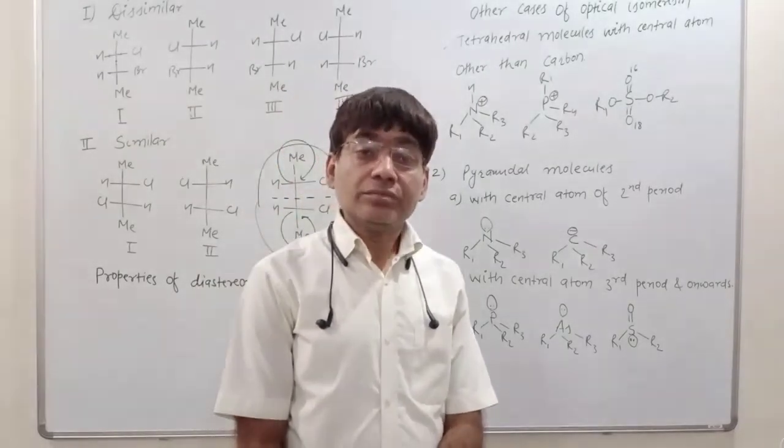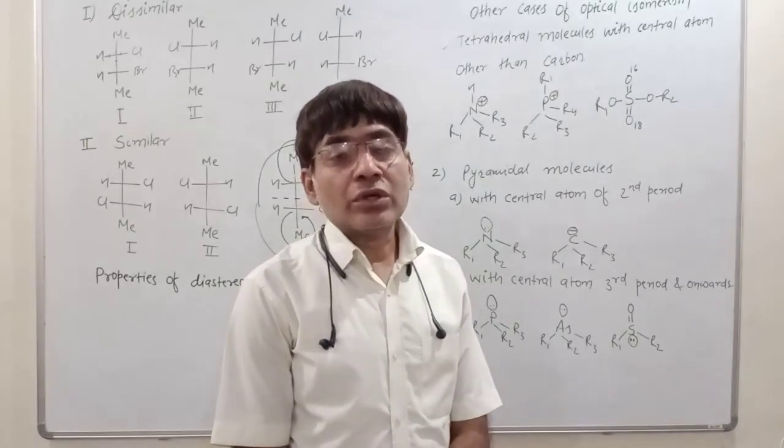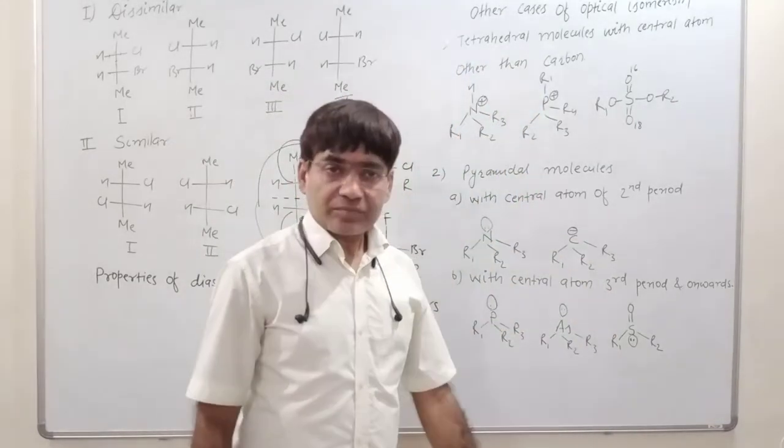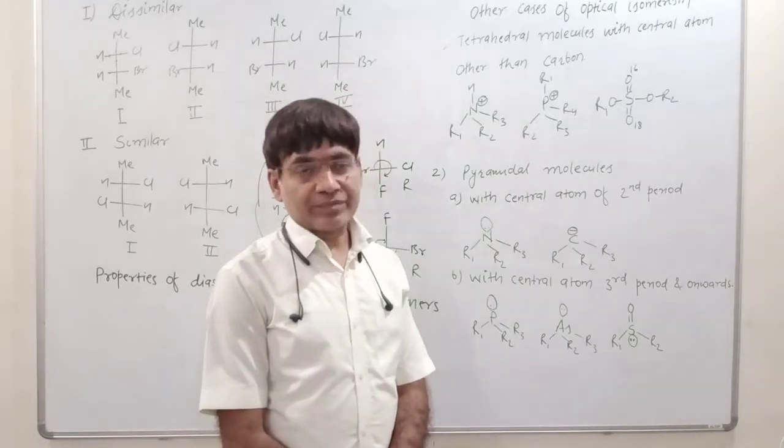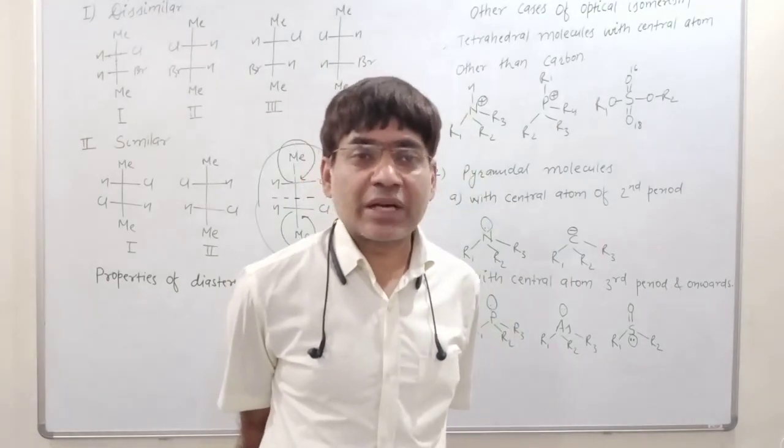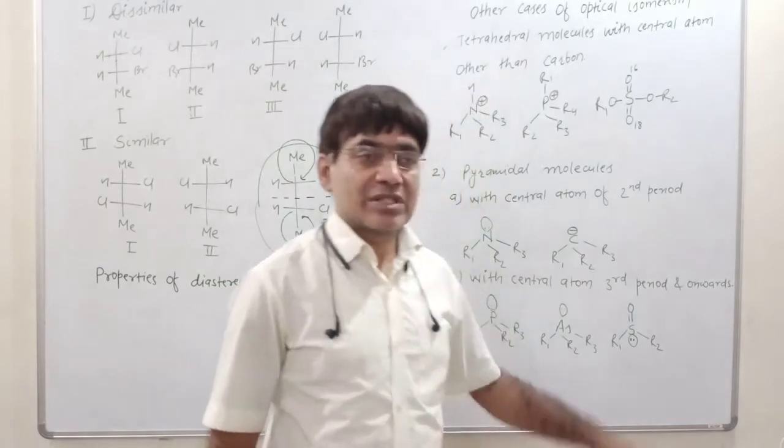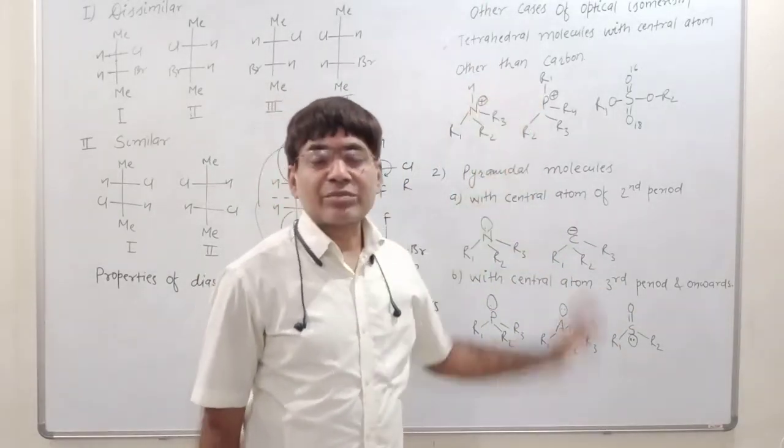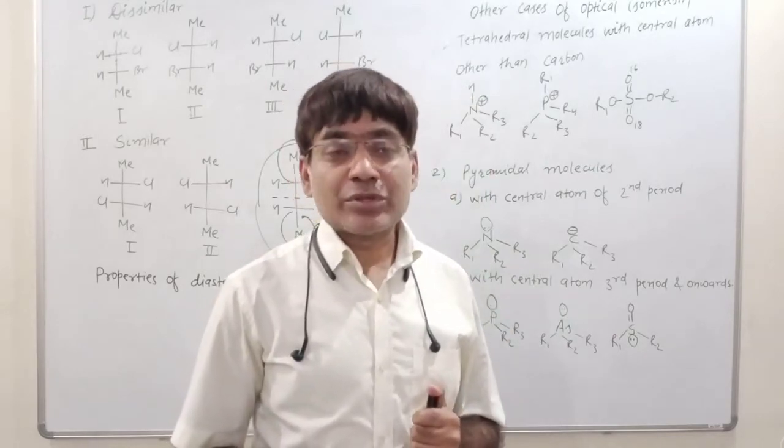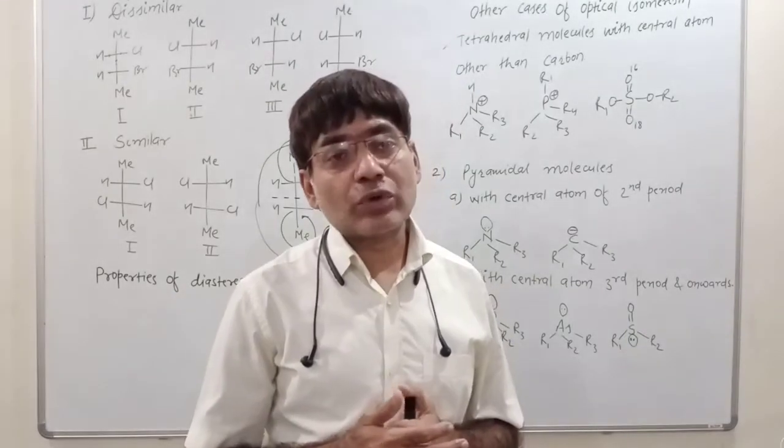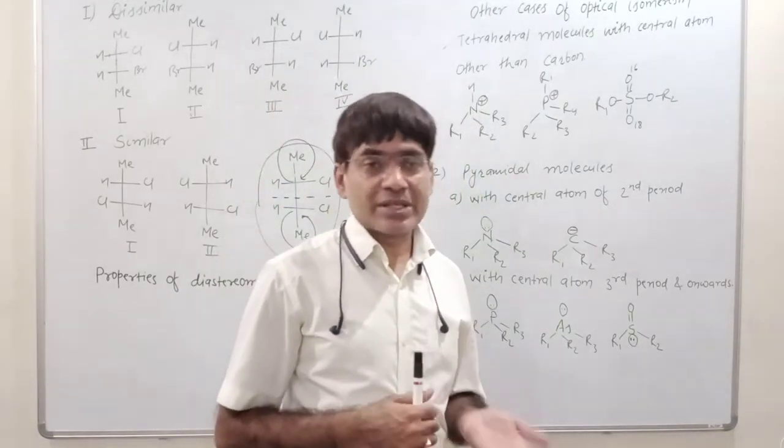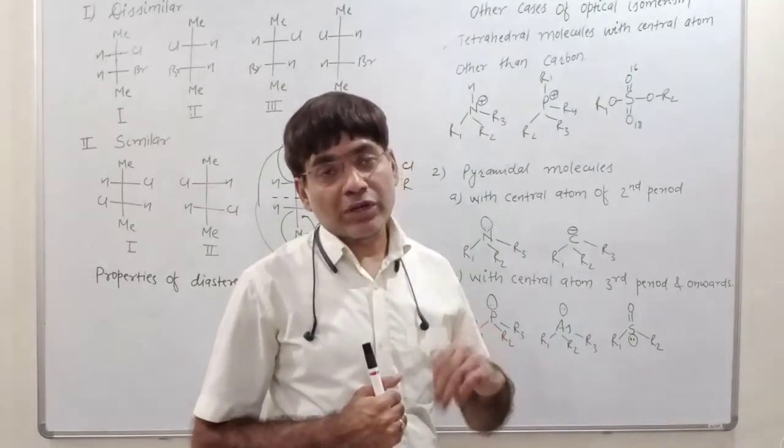The other cases of optical isomerism are exactly like a tetrahedral carbon containing four different atoms or groups at four of its valences, and the structure is non-planar. So, the molecule is dissymmetric.